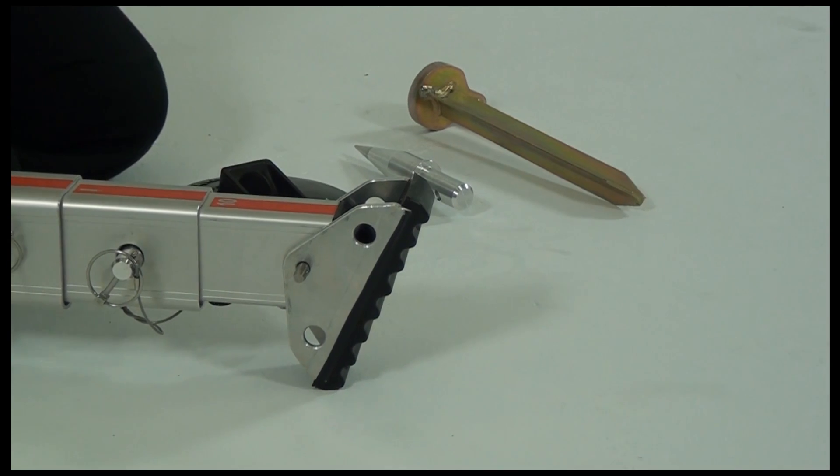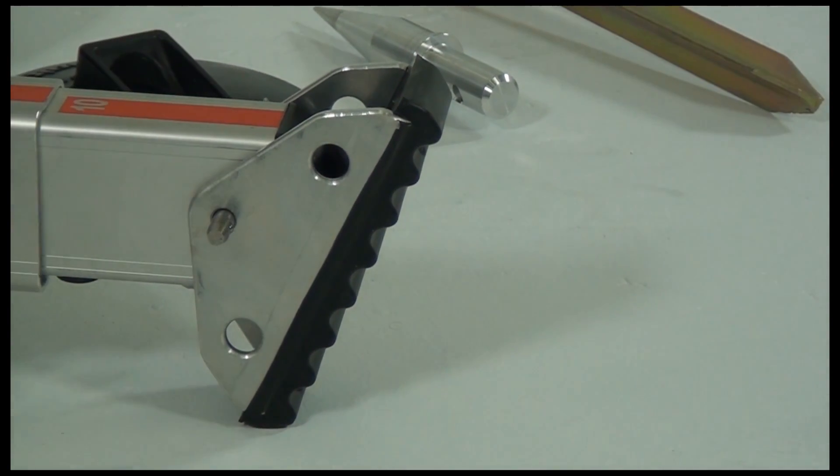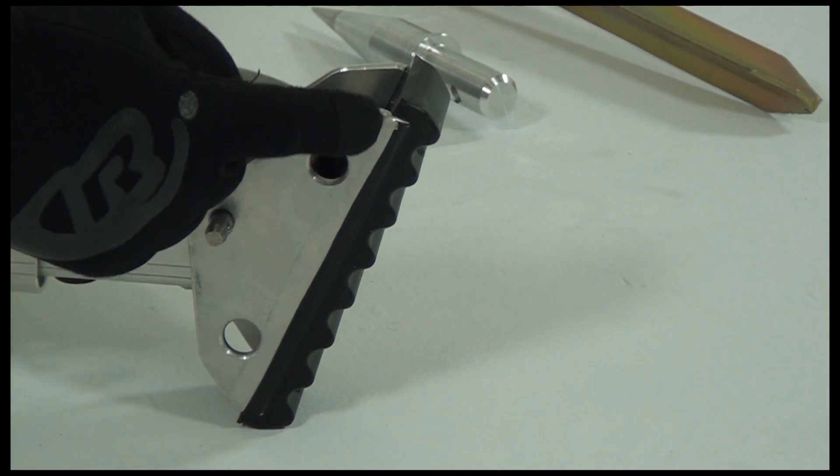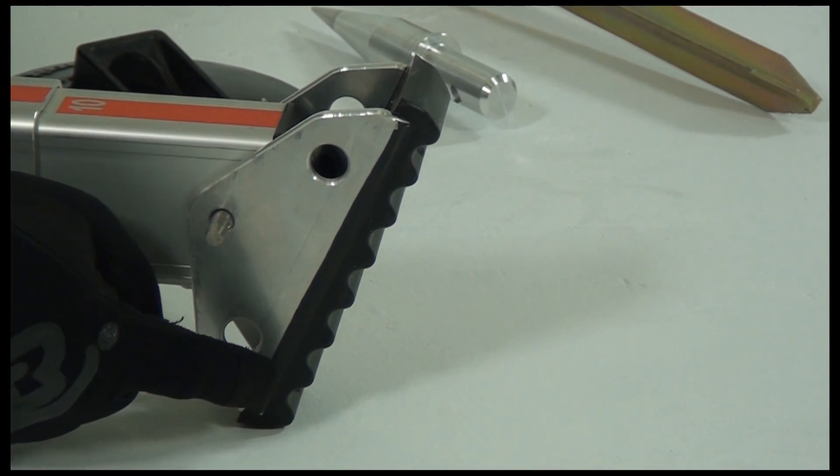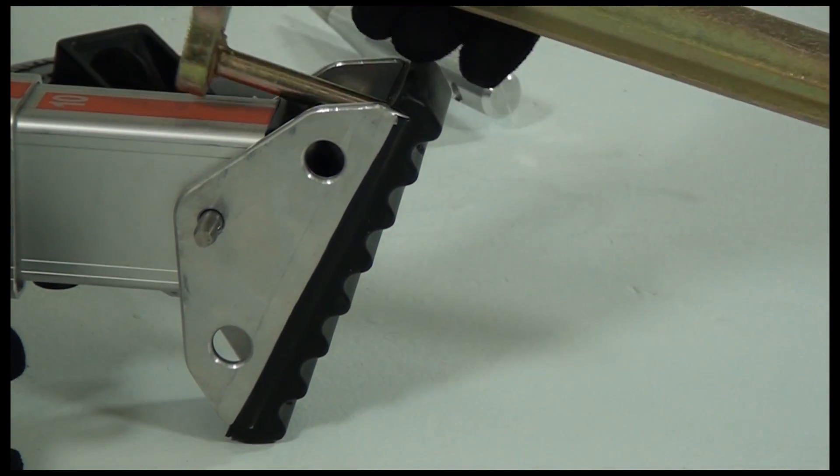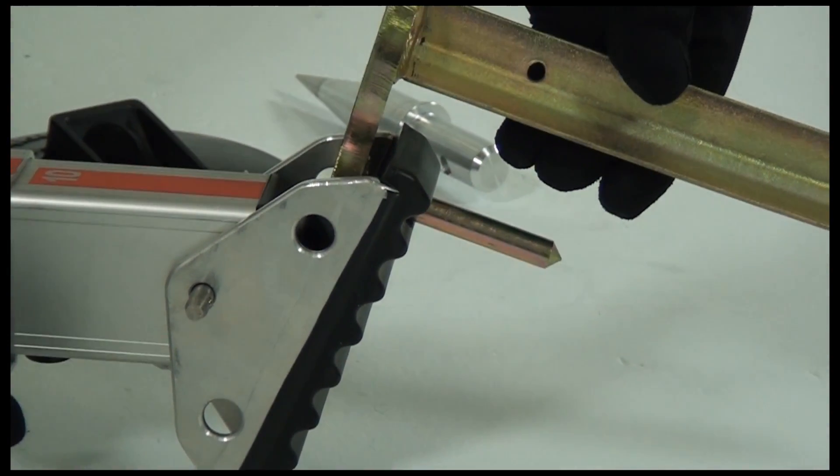All Arachnipod legs come supplied with a standard foot which is ideal for flat surface applications. It has a moulded soft polyurethane tread set within the profile foot. A hole in the base allows the foot to be staked or bolted to the ground.